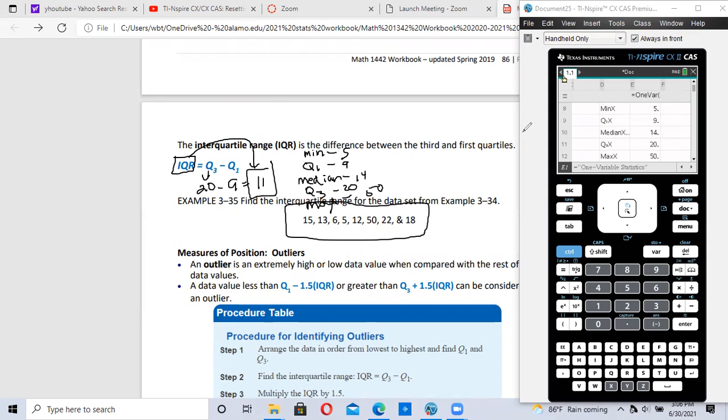This is also called the five-number summary. One, two, three, four, five. Five numbers starting with the minimum, Q1, median, sometimes known as Q2, Q3, and the maximum piece of data. I hope this video helped.